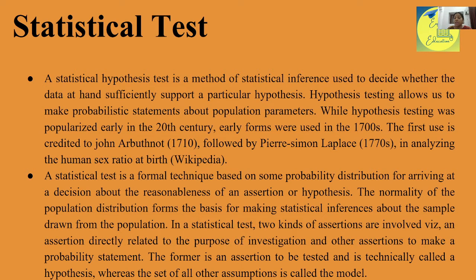The first assertion is the purpose of investigation, which is technically called a hypothesis. Whereas the set of all other assumptions is called the model. These are the two things that the statistical test measures: first the hypothesis — its reasonableness — and second the model that we follow, which may be a normal probability distribution or not.